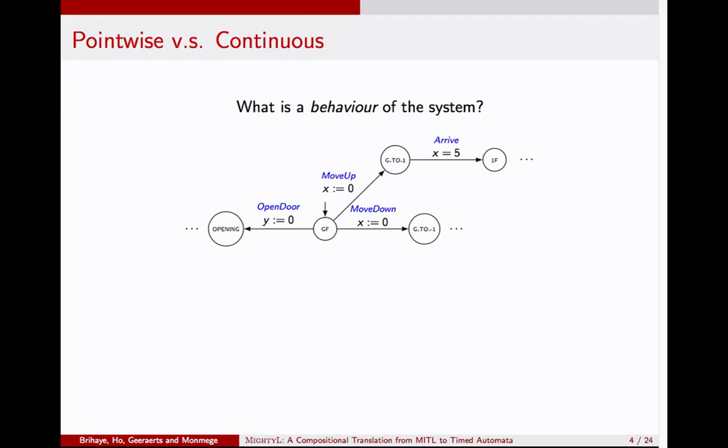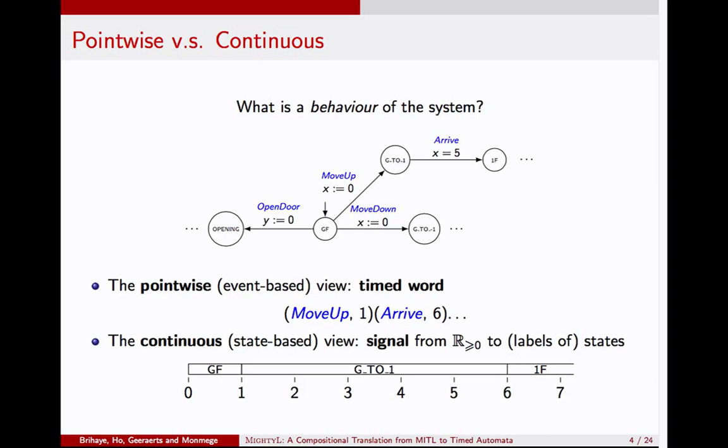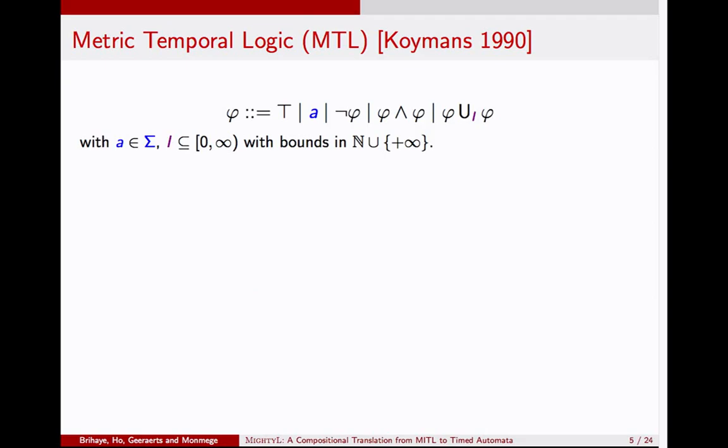Before we go on, it's important to be aware that there are two semantics of timed automata in the literature. The first one is called the point-wise semantics, which is based on timed words, which are sequences of events along with their timestamps. The other semantics is called continuous semantics, in which a behavior is a signal, that is a function from the non-negative reals to the labels of states. If you see this behavior in the continuous view, you will see a function like this. In this talk, however, I will focus on the first one, the point-wise view, based on timed words.